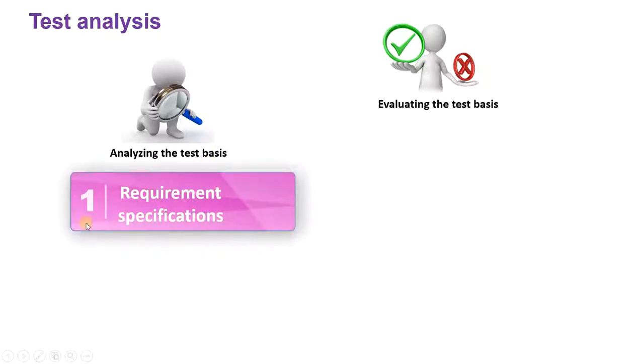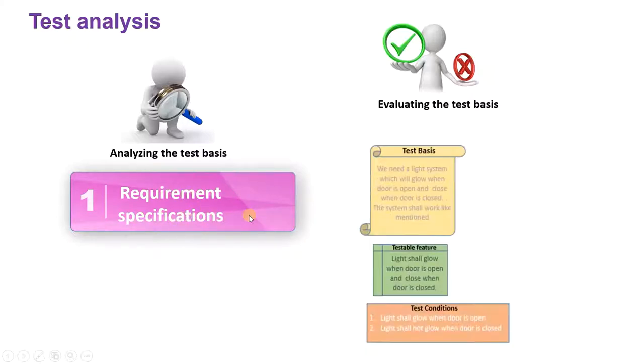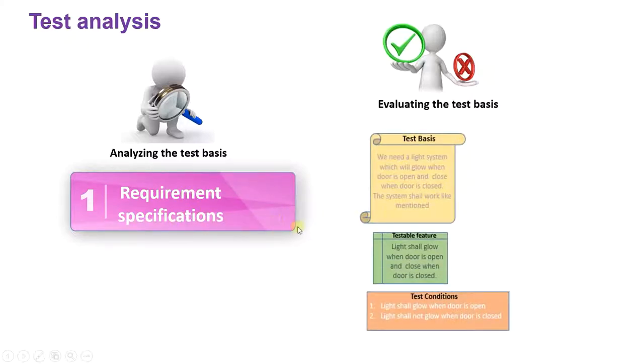The first document that comes under the microscope is requirement specifications. We have already covered why we analyze the requirement—it's because we are trying to find out what we have to test.